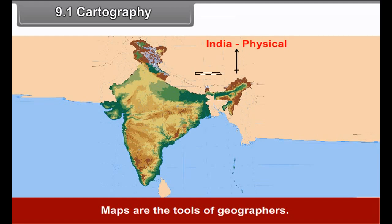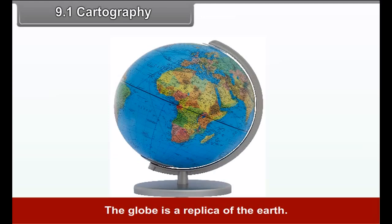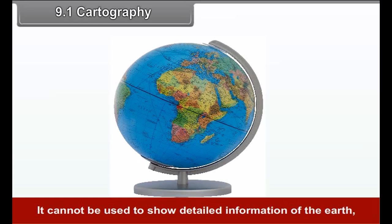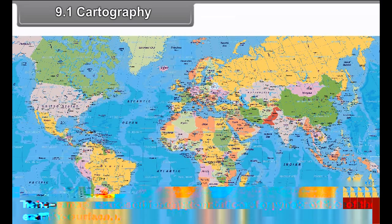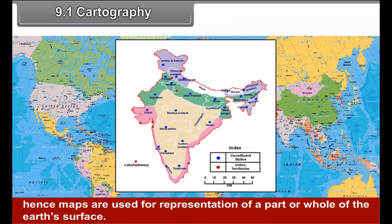9.1 Cartography. Maps are the tools of geographers. Geography can be understood well with the help of maps. Geographical features are often represented by maps. The globe is a replica of the Earth. It cannot be used to show detailed information of the Earth. Hence, maps are used for representation of a part or whole of the Earth's surface.